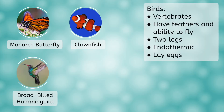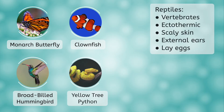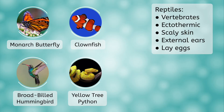Our third group are birds. Birds, along with the rest of our groups, are vertebrates, have feathers and beaks, have the ability to fly, only two legs, lay eggs, and are warm-blooded, meaning they can control their own body temperature. Reptiles are next on our list. Reptiles are cold-blooded, have scaly skin, external ears, and lay eggs.